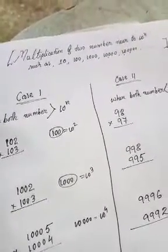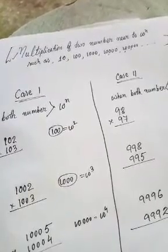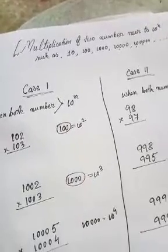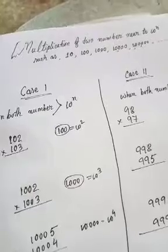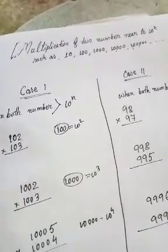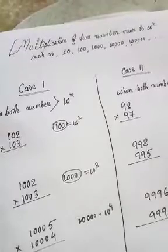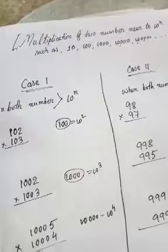Multiplication of two numbers near to 10 to the power n. 10 to the power n is 10, 10 to the power 2 is 100, 10 to the power 3 is 1000, 10 to the power 4 is 10,000, 10 to the power 5 is 100,000.